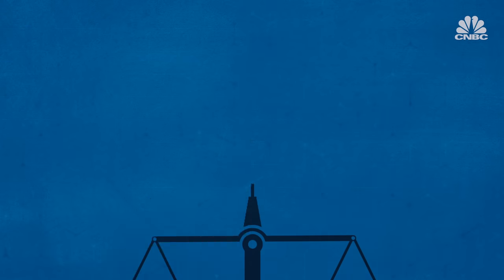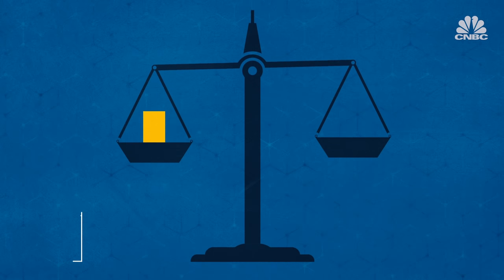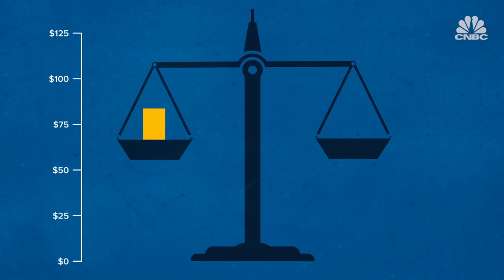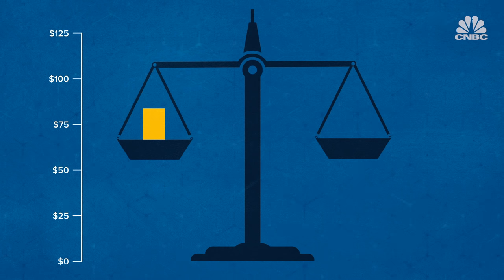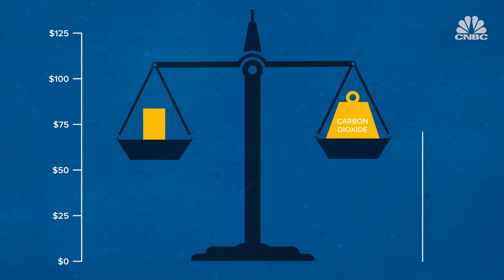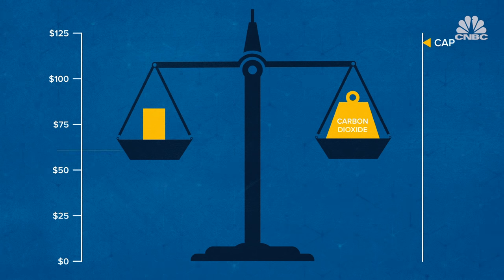A credit, which can start from $12 or run as high as $125, allows for the emissions of pollutants equivalent to one tonne of carbon dioxide. The price of carbon is determined by supply and demand.